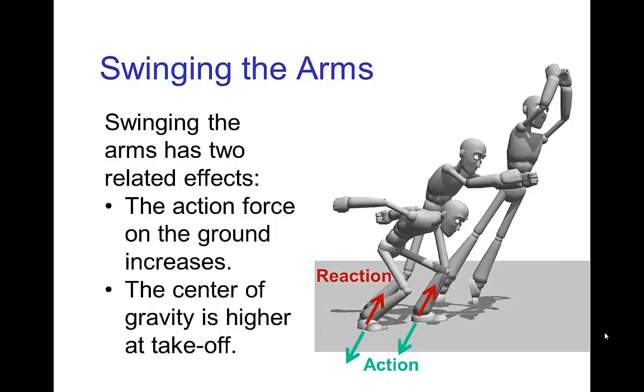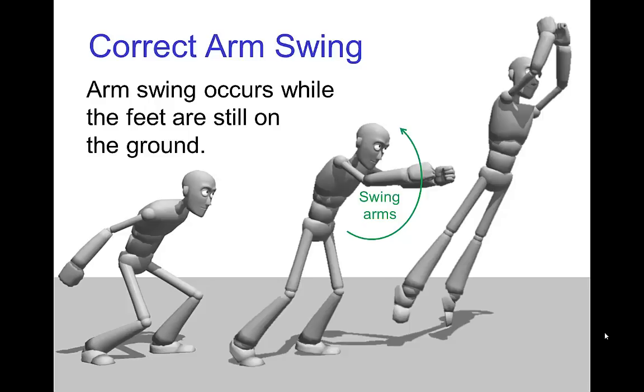And the swinging of the arms has two related effects. As you're swinging the arms upward, you actually exert more force on the ground and so you have a larger reaction force pushing you up. And then also once you take off, because your arms are raised, your center of gravity is already higher up off the ground. Now, the correct way to swing the arms when jumping is to swing them while the feet are still in contact with the ground.